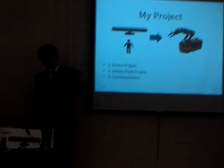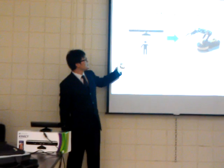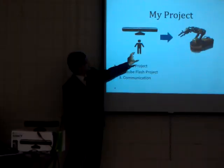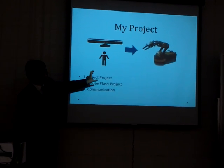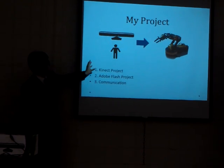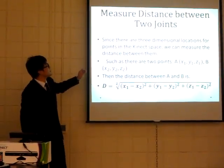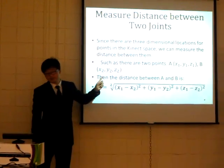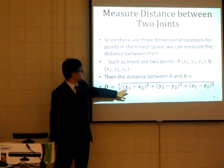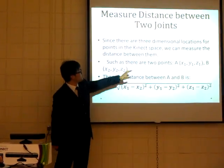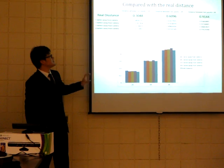Using this library, I built my project, which has three main parts. First, the Kinect project detects a human and generates commands for the robotic arm. Second, the robotic arm project implements those commands. Third, there is the communication layer between these two projects. In the Kinect project, the main algorithm measures the distance between two joints using the Euclidean distance equation, since we have three-dimensional locations for each joint.